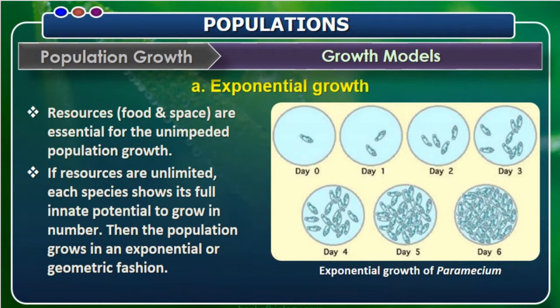Predators maintain balance in an ecosystem's food chain or food web — when predators are present, the prey population decreases. But here I am describing a situation where there is no predator and enormous food is available, so reproduction is more. The population grows exponentially as long as food is available, and after the food is exhausted the population may decline. This type of growth appears as a J-shaped curve on a graph.